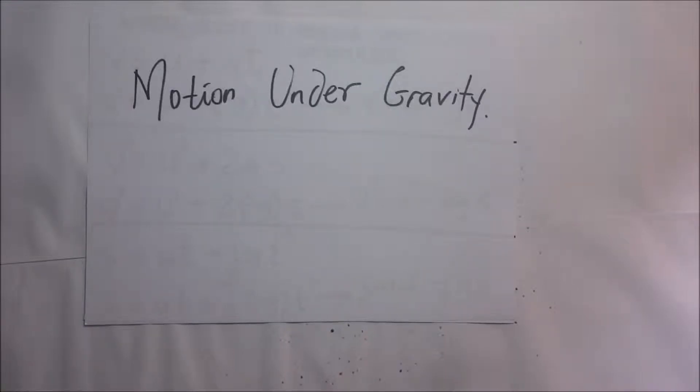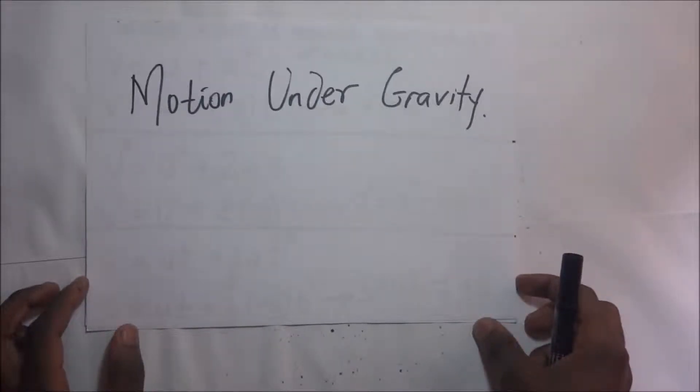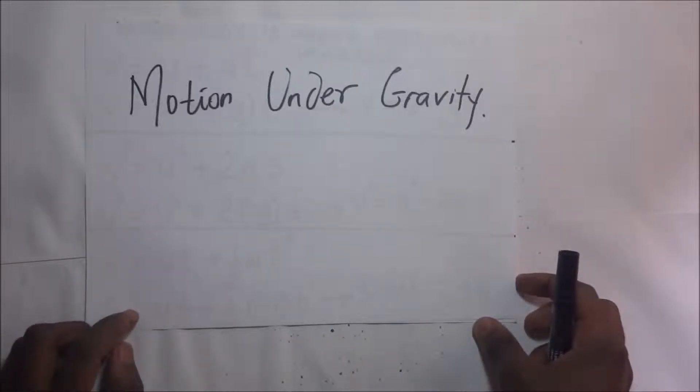Gravity varies from place to place depending on where you are on the earth. In some places gravity is 10 meters per second squared, in others it is 9.8. For the purposes of this video, we shall take our value of gravity or acceleration due to gravity to be 9.8 meters per second squared.